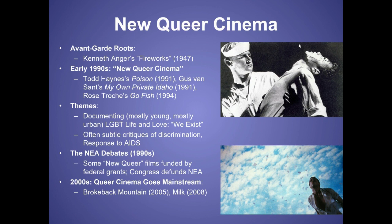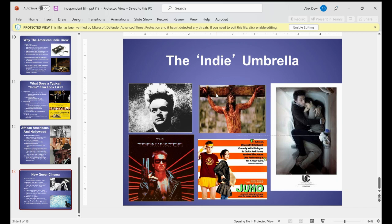There was a big debate because the NEA — a program that gives grants to artists to make films — funded some of these new queer films with federal money. Congress did not like that and defunded the NEA, which is very sad; there was still a lot of homophobia in the 90s. Then in the 2000s, queer cinema went mainstream — one of my favorite films of all time, Moonlight, would be an example, along with Brokeback Mountain and Milk with Sean Penn.